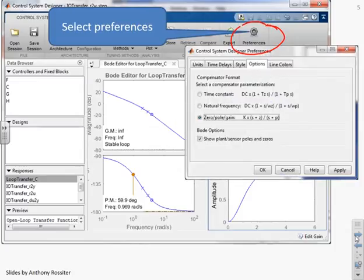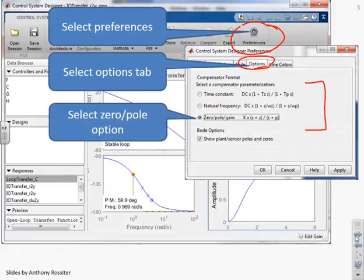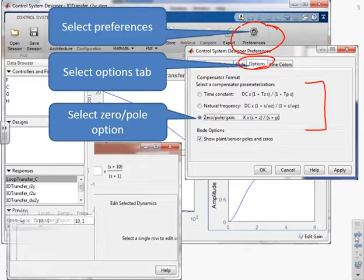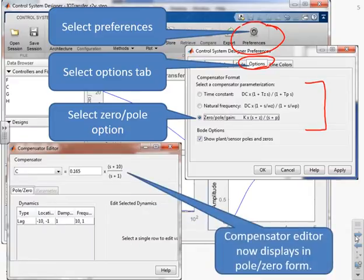When you do that, you'll get a window a bit like this. Go to the tab which says Options, and under that tab you'll see a number of different display formats for compensators. The one we're going to use is zero-pole. When you select that and open the compensator editor window, you'll see that the compensators are now displayed in pole-zero form.